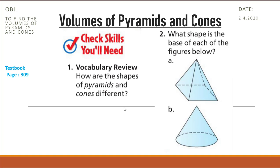Of course, we have a difference here because the base of a pyramid is a polygon, whereas the base of a cone is a circle. Of course, we know that the circle is not considered a polygon.